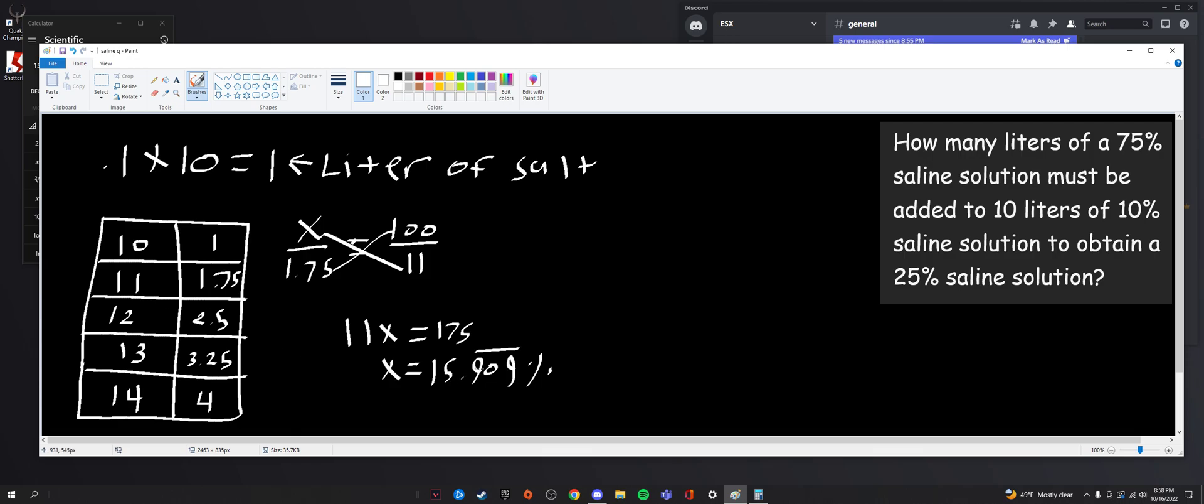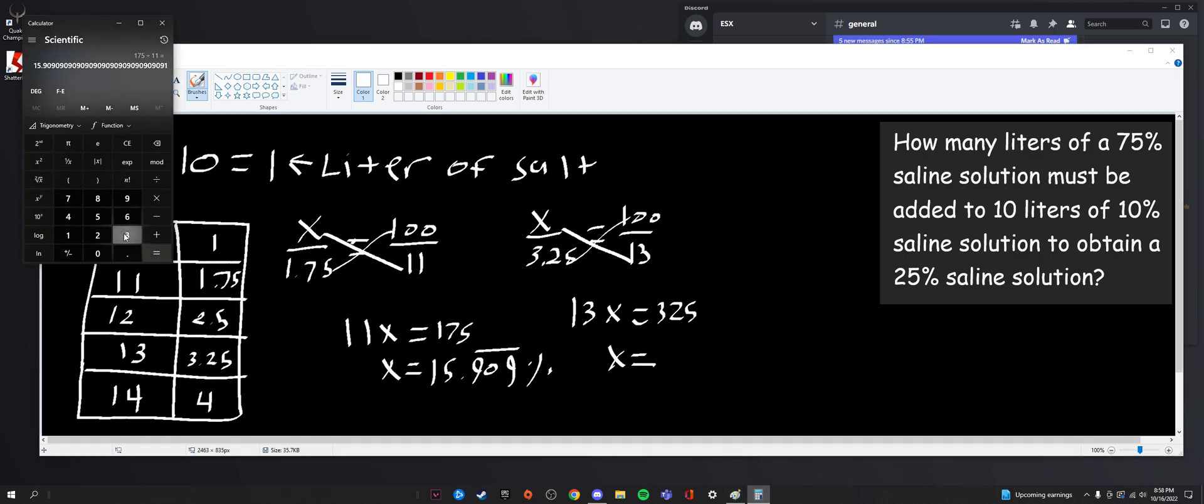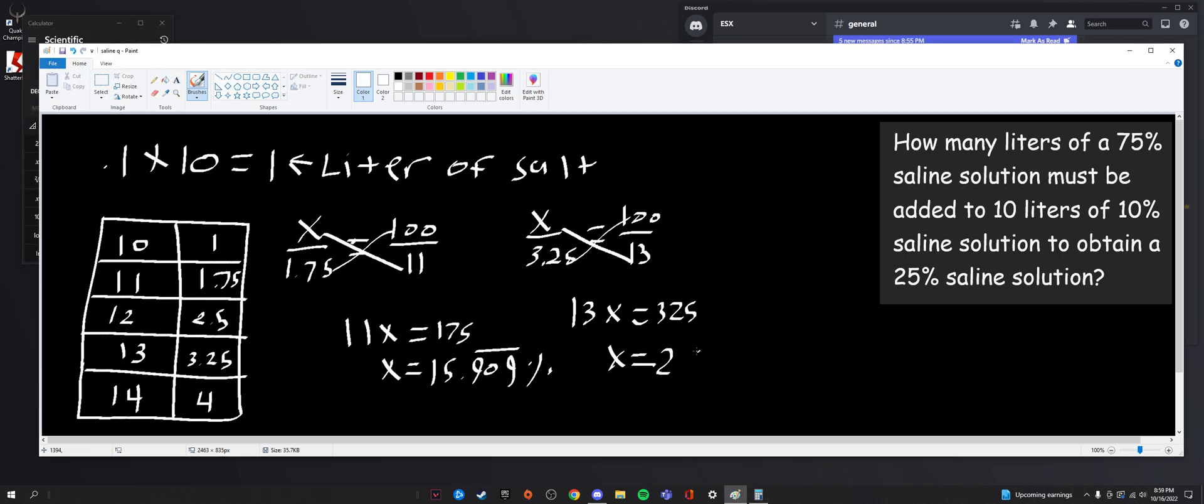Now you do that for all these values, and you'll get, we'll just do 13 because that's the answer. So we have x over 3.25, this is equal to 100 over 13. Cross multiply, we get 13x equals 325, therefore x equals 325 divided by 13. We get 25. Yay, we did it! 25%, therefore x equals 25.